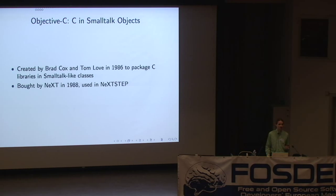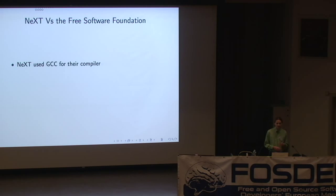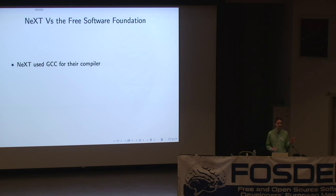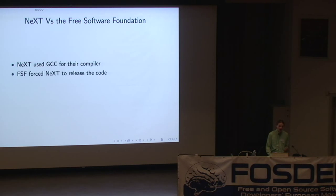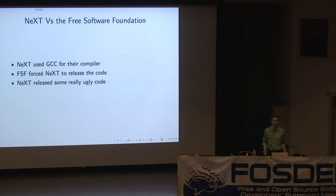NeXT bought his company, bought the Objective-C trademark, and shipped it as the core development system for their workstations. Both people who bought a NeXT workstation really liked it. NeXT and the Free Software Foundation had a little falling out around this time. NeXT took the GNU compiler collection and added an Objective-C frontend. They tried to work around the GPL by releasing it as a shared library, thinking they didn't have to release the source — keeping it proprietary gave them a massive competitive advantage. Apple has since learned that having an Objective-C compiler gives them no competitive advantage at all, so they released it as open source.